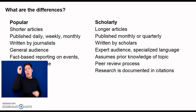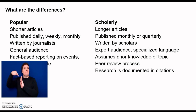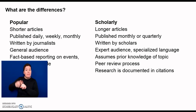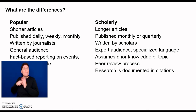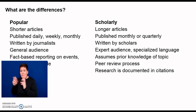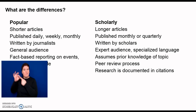Scholarly articles, on the other hand, are longer, published monthly or quarterly, written by scholars, and intended for an expert audience written in a specialized language. They also assume prior knowledge of the topic, and go through a peer review process. The research in the article is documented in citations.